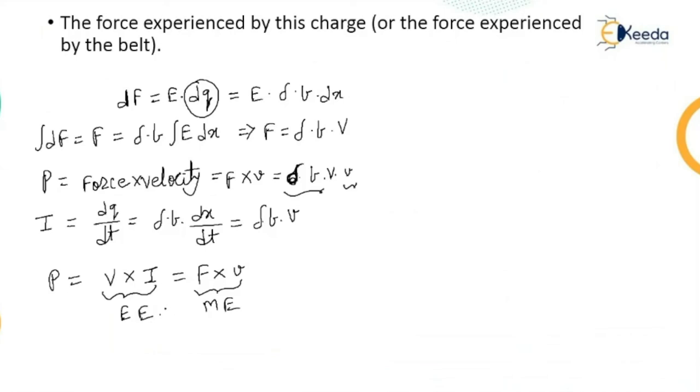Assuming no losses, the power output can be equal to voltage into current, that is electrical energy. This way, this basic principle tells us the conversion of mechanical energy into electrical energy. That's all with this class on basic principle. Thank you so much.